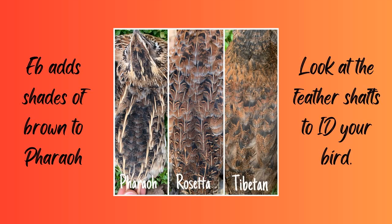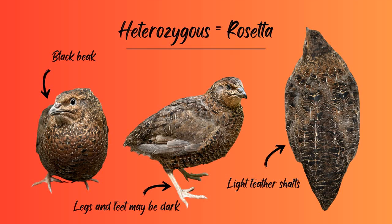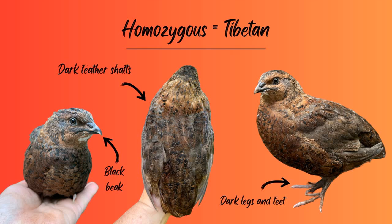EB adds shades of brown to pharaoh. With one copy of EB you see Rosetta, and two copies gives you Tibetan. With Rosetta, you're going to have light feather shafts — that's the big thing to look for. The legs and feet may be dark, but usually not quite as dark as with a Tibetan, and they also tend to have a black beak. With homozygous Tibetan, you're not going to see those light feather shafts — they're going to be dark. They will also have that black beak and their legs will be much darker.